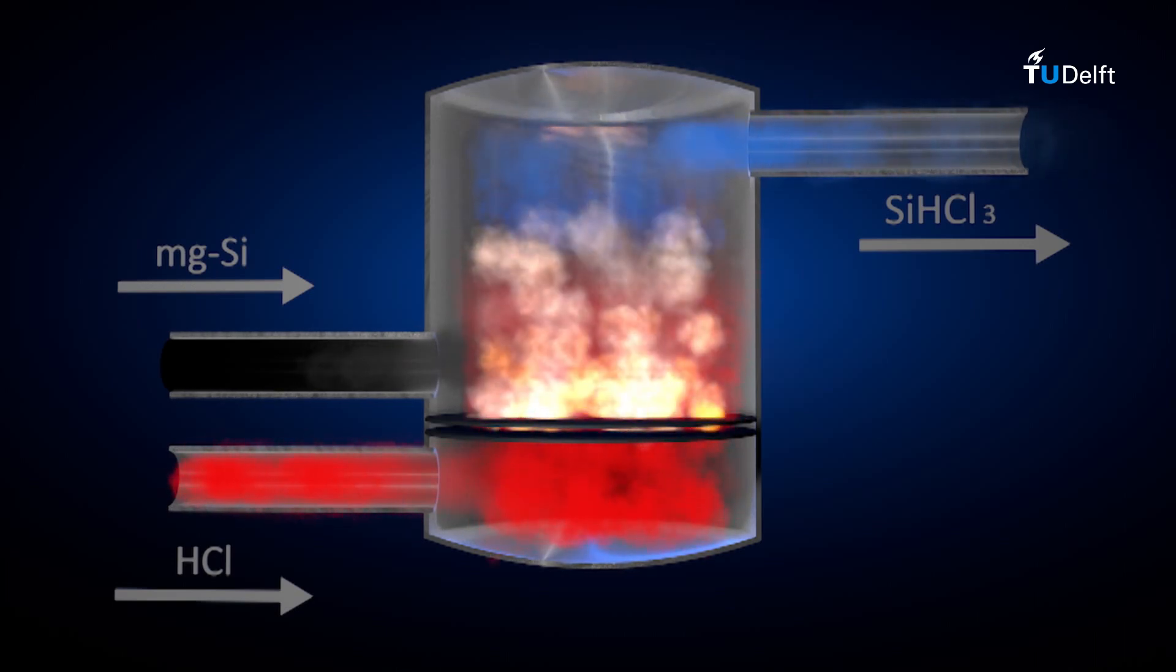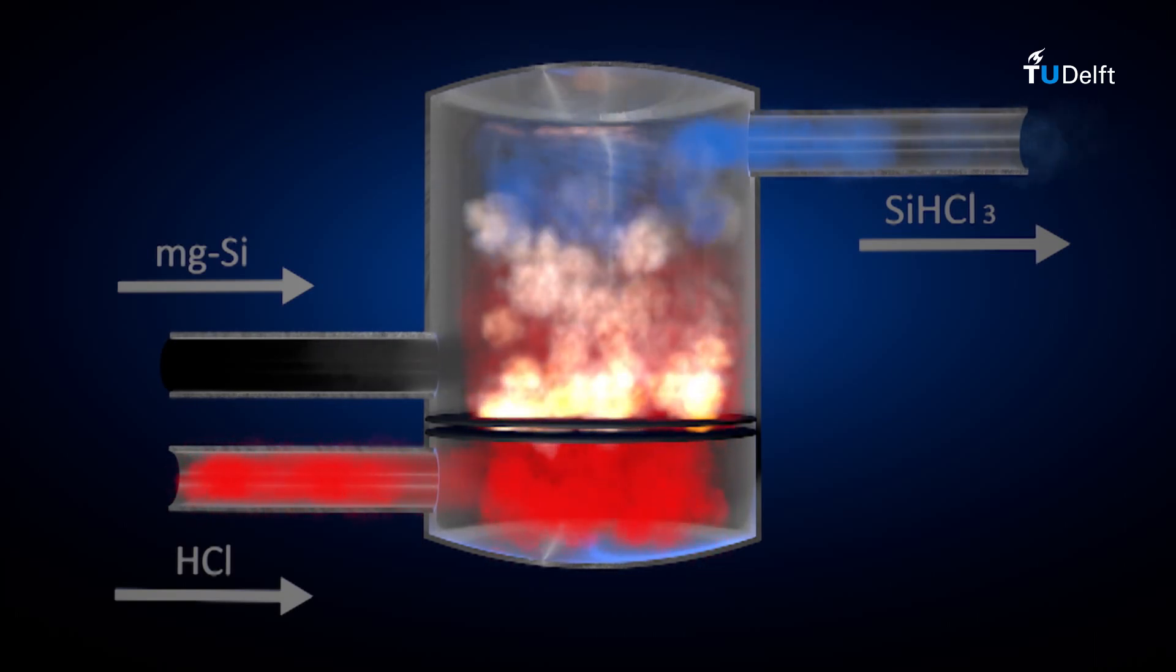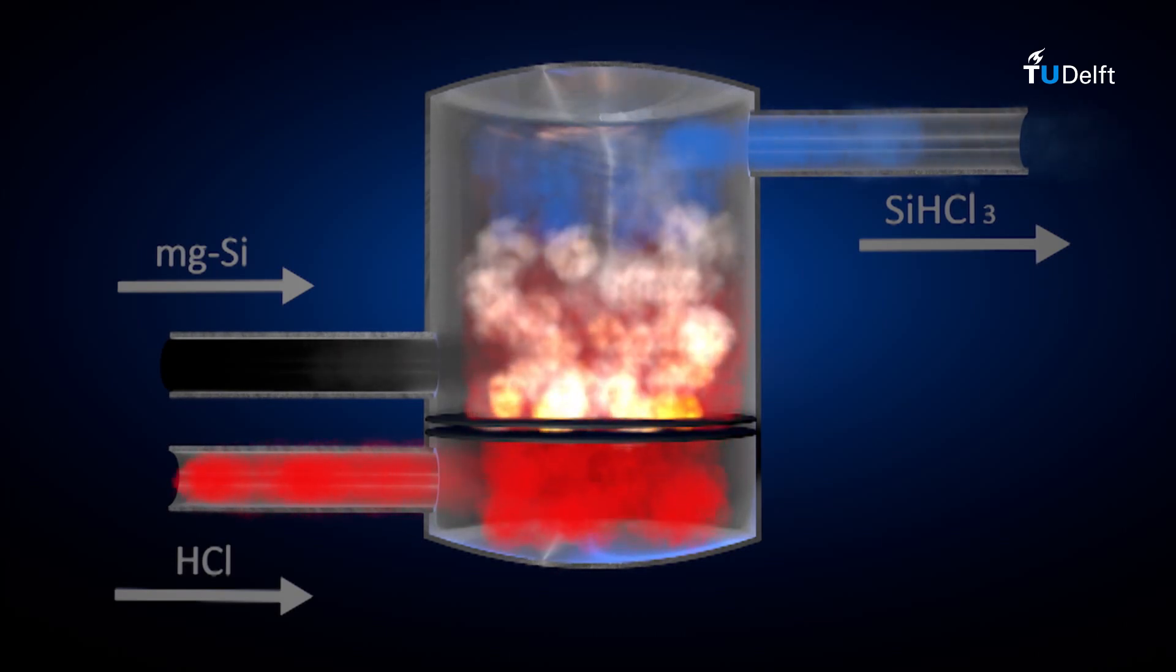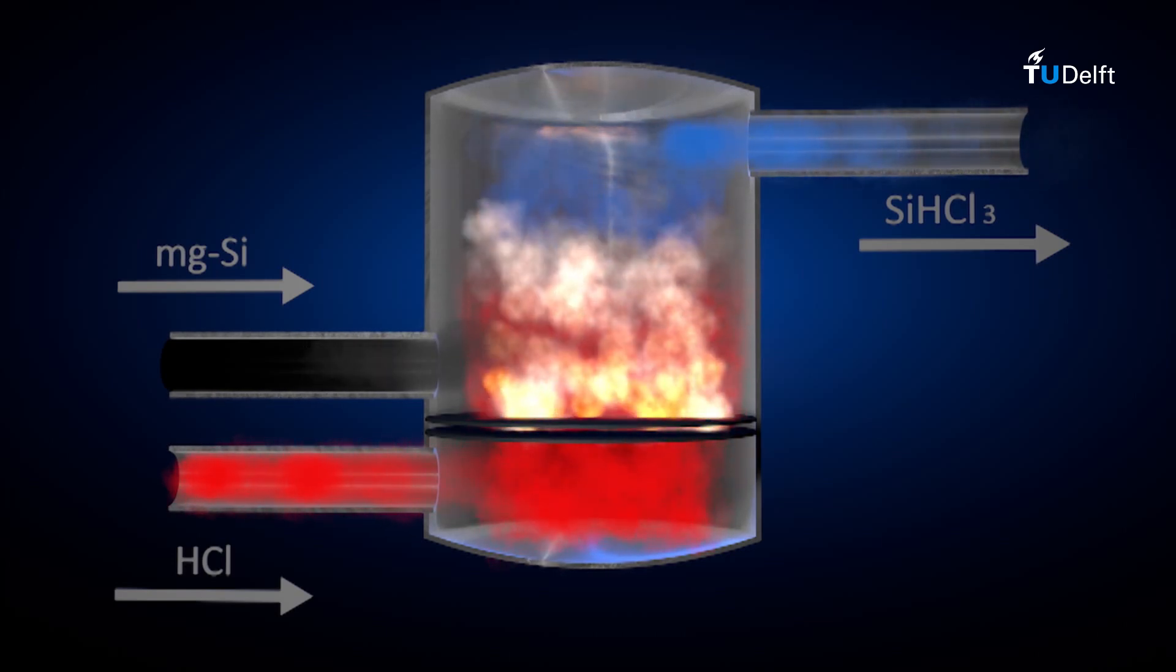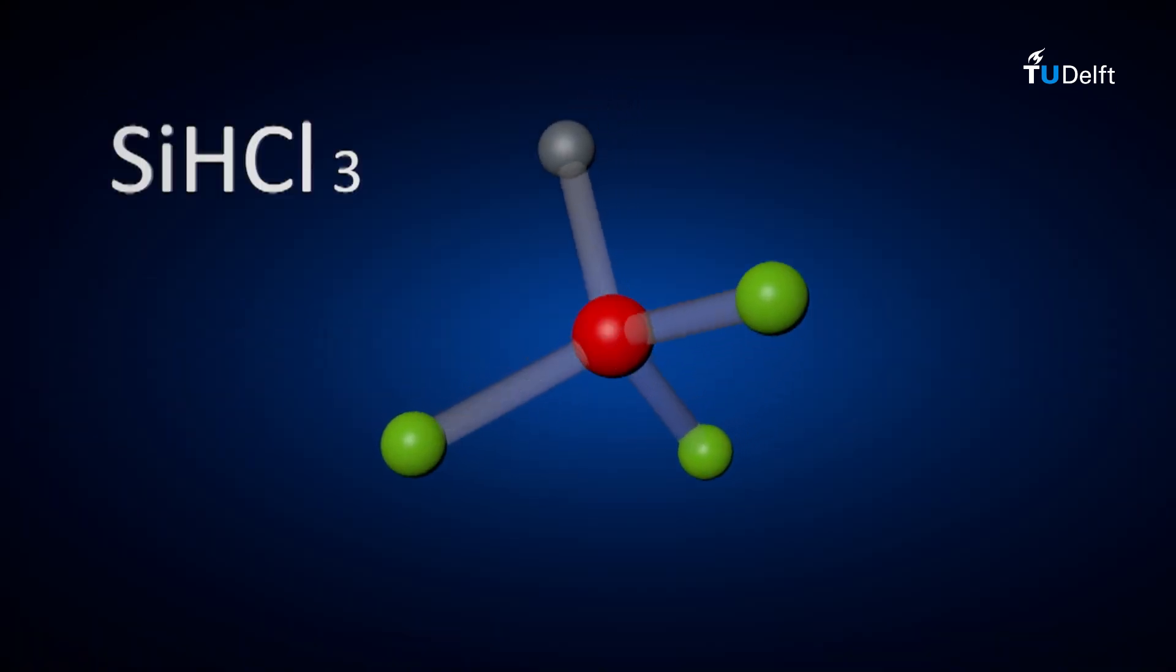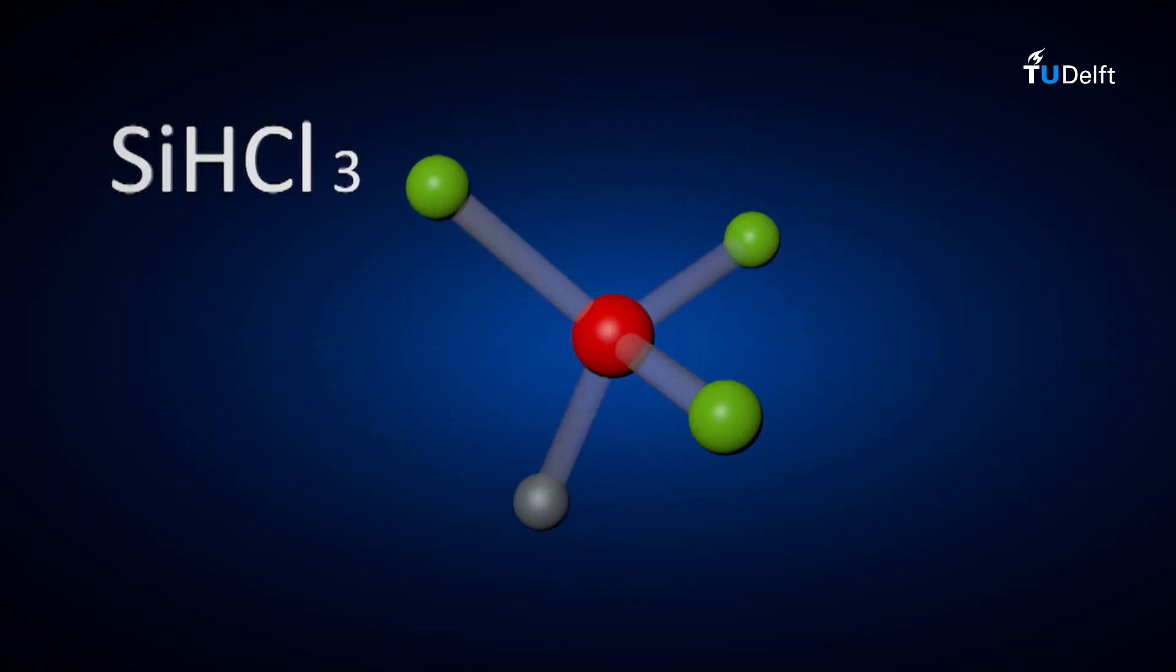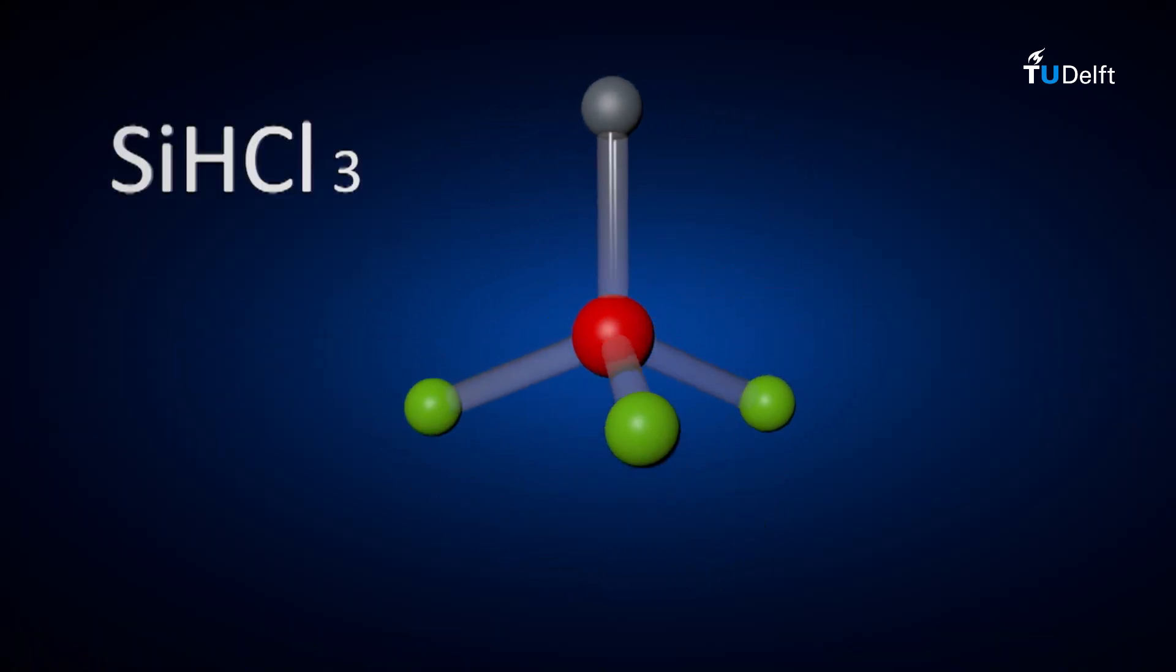The metallurgical silicon is then exposed in a reactor with hydrogen chloride at elevated temperatures in presence of a catalyst. The silicon reacts with the hydrogen chloride and starts to form trichlorosilane. This is a molecule that contains one silicon atom, three chlorine atoms and one hydrogen atom. The trichlorosilane gas is cooled and liquefied.